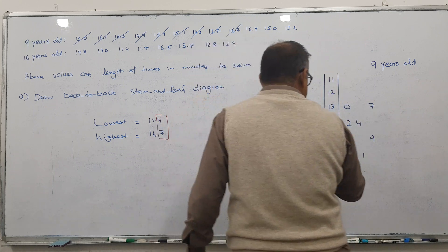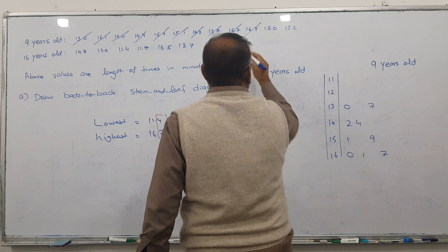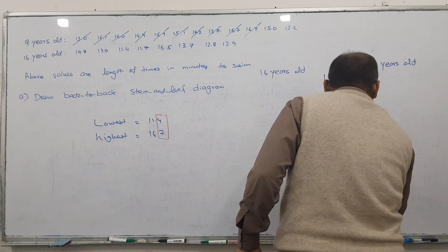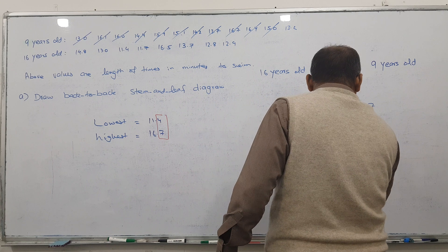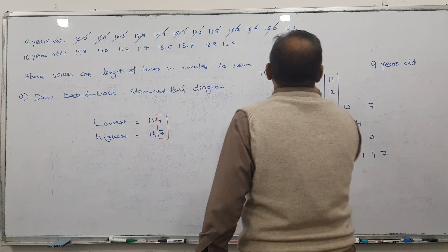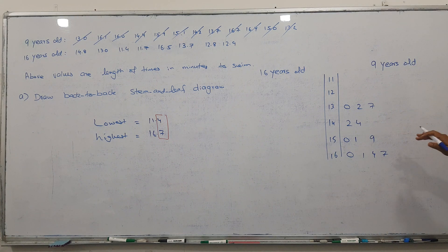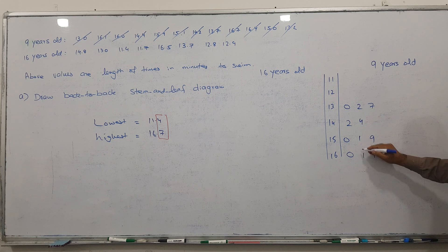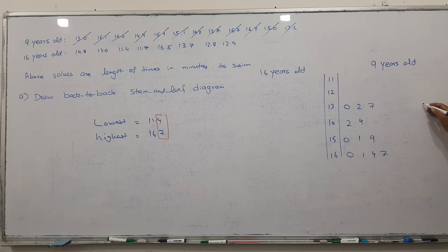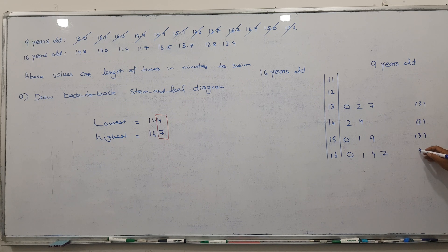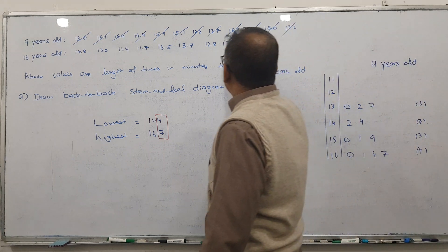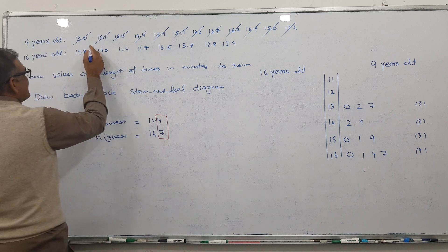16.7 is coming here; 16.4 comes with 1 and 7 in the middle. 15.0 I got, 14.1, 13.2 — written here. First of all, rub and put in order. Three numbers here, two numbers here, three numbers here, and four numbers here: 7, 7, 2, 9, 9, 3. Total count: 1, 2, 3, 4, 5, 6, 7, 8, 9, 10, 11, 12.